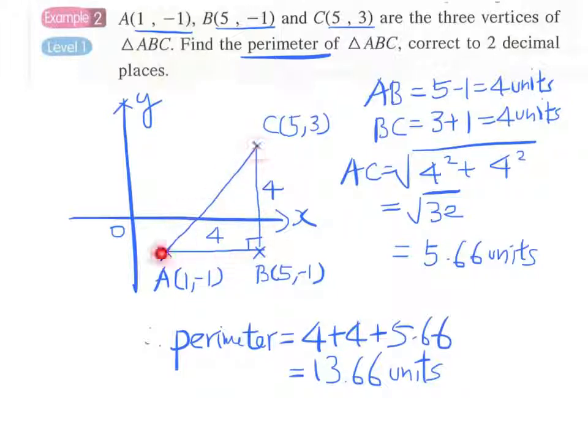Actually this triangle is more than just a right-angled triangle because AB and BC are both 4 units, so this is also an isosceles right-angled triangle.